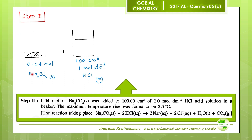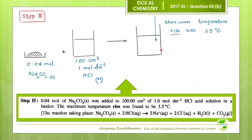During step 2, 0.04 moles of solid sodium carbonate was added to 100 cm³ of 1 mol/dm³ aqueous HCl solution. The maximum temperature rise of the final solution was 3.5°C. This means the temperature increases when solid sodium carbonate reacts with aqueous HCl — heat is released and absorbed by the surroundings. Therefore, this reaction is exothermic and the sign of ΔH is negative.